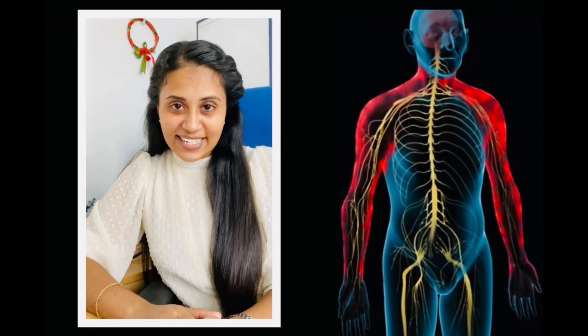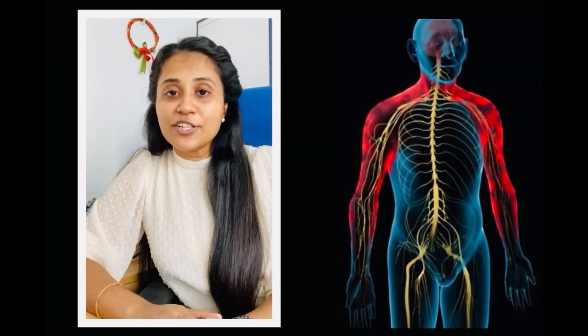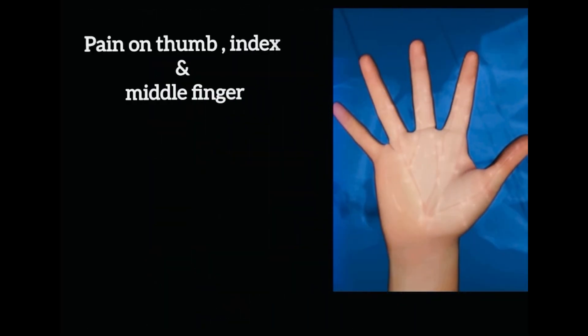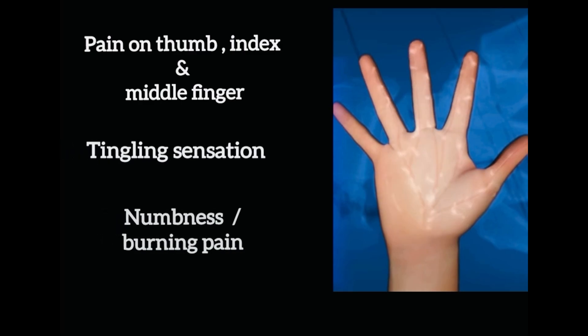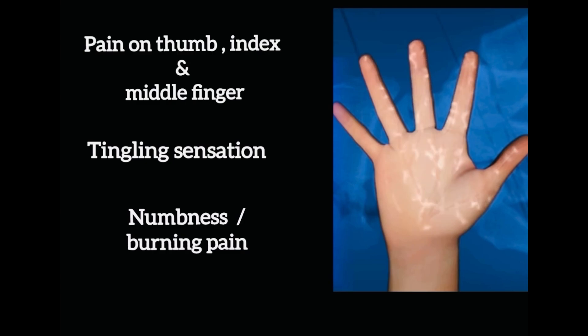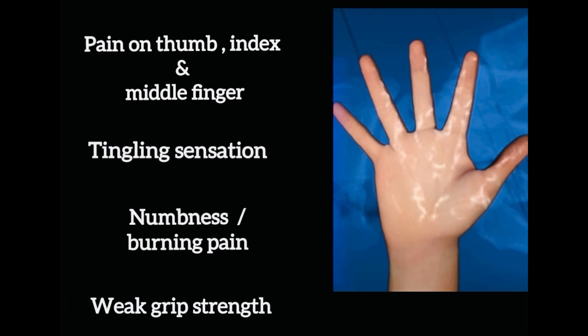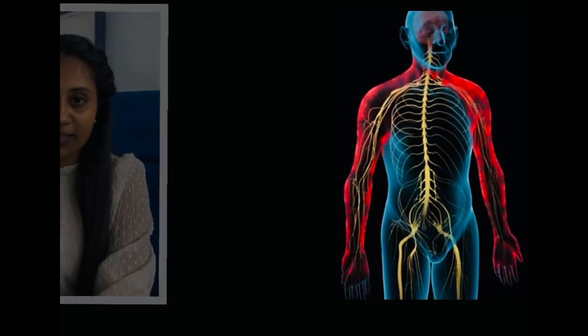Symptoms of carpal tunnel syndrome: the pain distribution will be on the first three fingers, along with tingling sensation, sometimes numbness, and sometimes a burning type of pain. Over a period of time, grip strength starts to decrease, especially with the thumb — you find it hard to hold things.